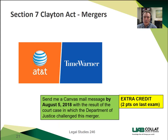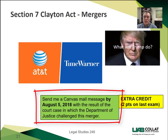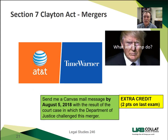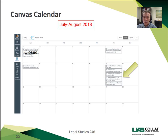Here's an extra credit opportunity: by Sunday night August 5, 2018, send me a Canvas mail message telling me the result of the court case deciding whether AT&T should be allowed to buy Time Warner — worth two points. Just tell me whether the result was to allow or not allow that merger to take place. Finally, looking at the Canvas calendar, our employment discrimination quiz is due August 5, 2018, at 11:59 p.m., but everything else in this course — all the quizzes and importantly the third exam — is due Friday night August 10 at 11:59.